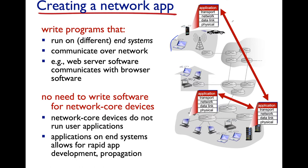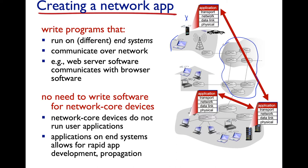All the applications running at the application layer speak and exchange messages with other components scattered around the network. These applications don't directly send messages to each other — the ability to exchange data is facilitated by the other four layers, from transport down through physical. There are two major flavors of how you can structure computations scattered around the network: client-server and peer-to-peer.